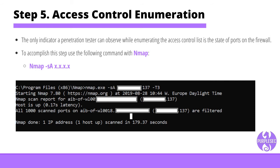Step five: access control enumeration. Every firewall employs access control lists to determine which traffic to allow or deny from the internal network. The only indicator a penetration tester can observe while enumerating the ACL is the state of the ports on the firewall. Nmap can be used with the ACK flag raised, sending packets to the first 1024 ports. Results will indicate if a port is open (in listening mode), filtered (blocked by the firewall), or unfiltered (the firewall is passing traffic through the port, but the port is not open).